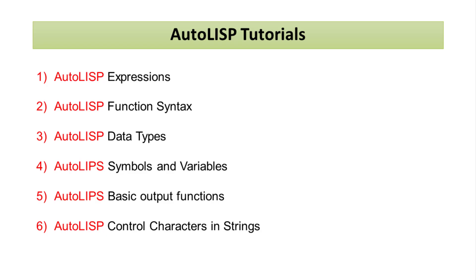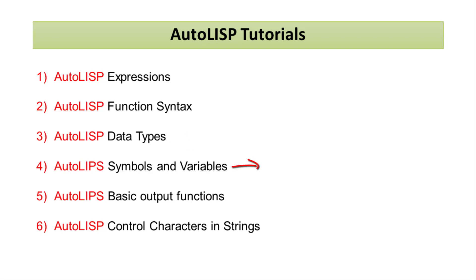This is an AutoLISP tutorial — a basic tutorial divided into six segments. First segment: AutoLISP expression. Second: the expression will be explained. Third: AutoLISP function syntax. Fourth: AutoLISP data types. Fifth: AutoLISP symbols and variables. Sixth: AutoLISP basic output functions. And the sixth category: AutoLISP control characters in strings.